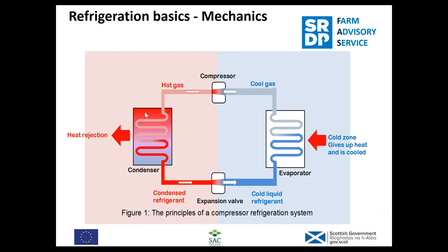The high-pressure hot gas goes into the condenser — usually sitting outside the refrigeration plant, or in a fridge it's the tubing on the back. The refrigerant gas can be at anywhere between 40 and 120 degrees depending on usage. It gives off heat and as it does so it condenses back to a liquid. Still at high pressure, it then goes through the expansion valve, which as it expands loses temperature and drops pressure. It's gone from a high-pressure liquid to a low-pressure liquid, becomes very cold, and starts to absorb heat. So that's the cycle.